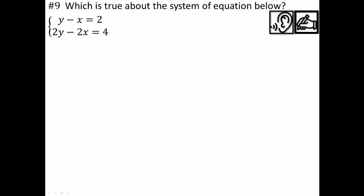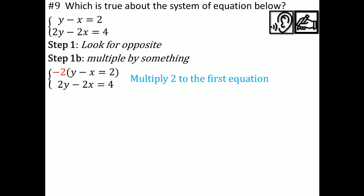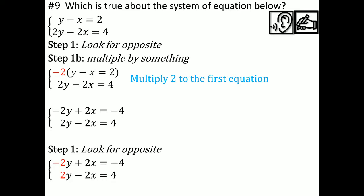Let's look at number 9. We're looking for opposites. There are no opposites here, so I'm going to multiply by something. There's a 1 in front of the y and a 2 — those aren't opposites. There's a negative 1 and a negative 2 — those aren't opposites either. So I'll multiply the top equation by 2: negative 2 times y is negative 2y, negative 2 times x is positive 2x, negative 2y equals negative 4.